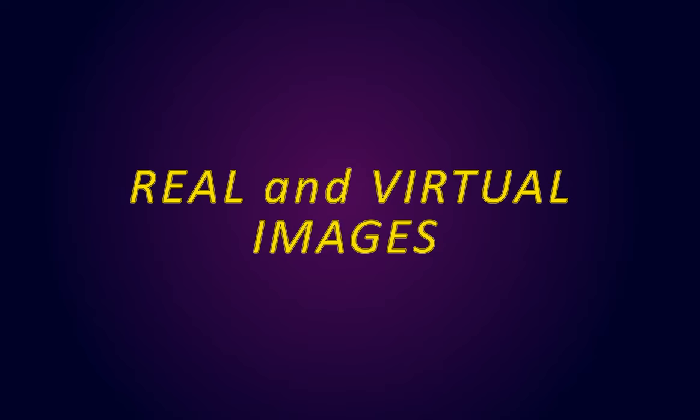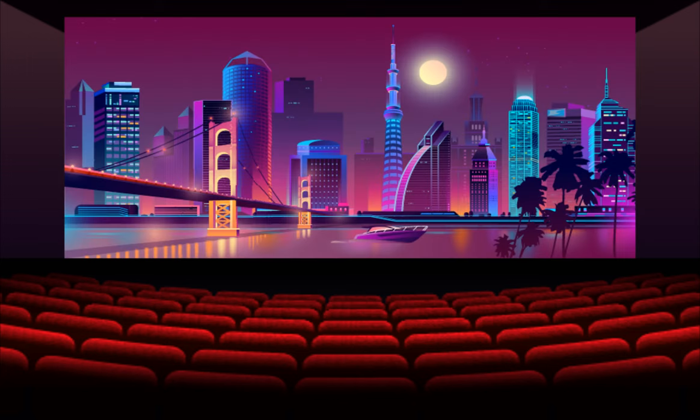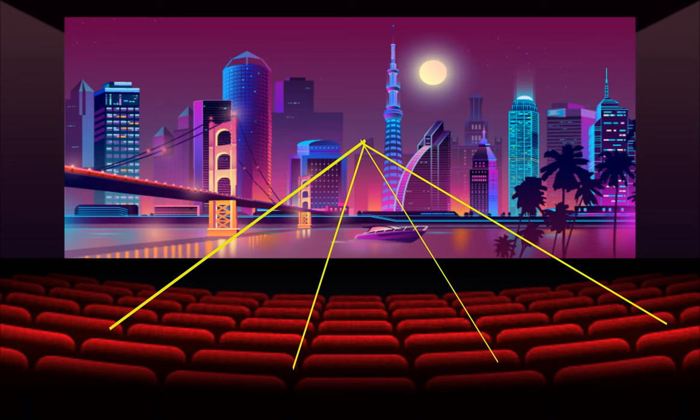Now we shall learn about real and virtual images in detail. Imagine you are in a theater where a movie is projected on the screen. This is an example of a real image. These images are formed by actual intersection of the light rays, so it can be caught on a screen.